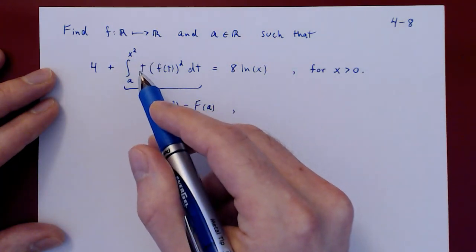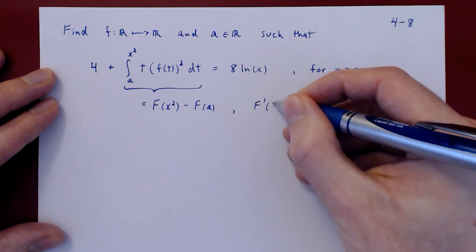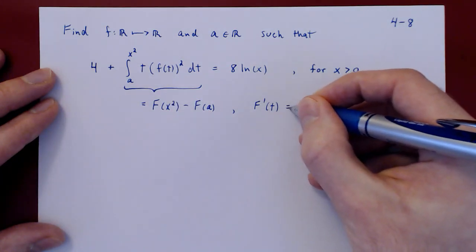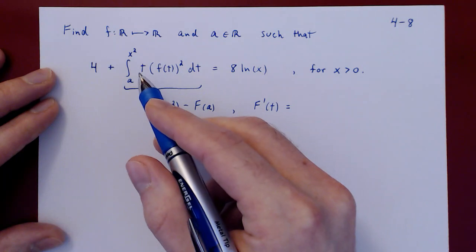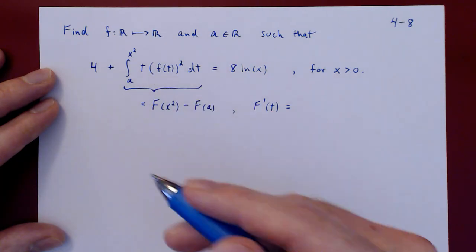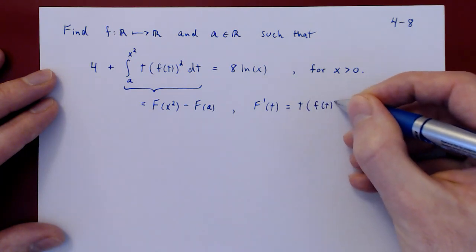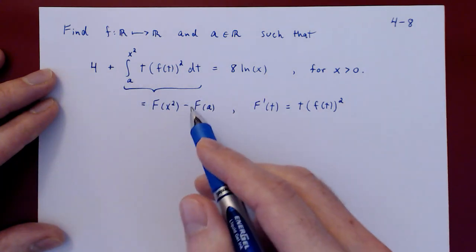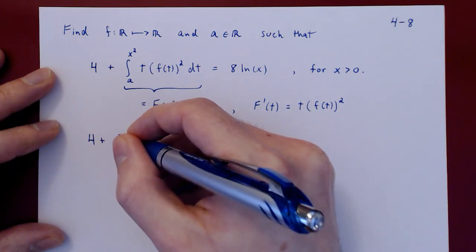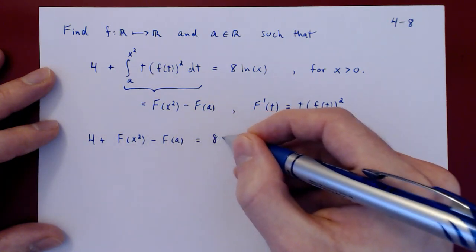Uppercase F is an anti-derivative of the function being integrated, which means the derivative of uppercase F at t — since the function that we are integrating here is with respect to t. F being an anti-derivative is a fancy way of saying the derivative of uppercase F is this function. Let's rewrite the equality using the fundamental theorem of calculus: the equality becomes 4 plus F of x squared minus F of a is equal to 8 ln of x.